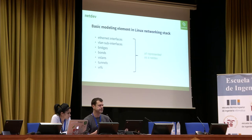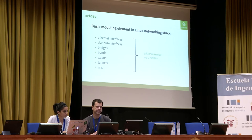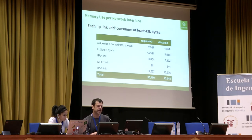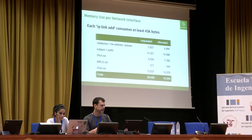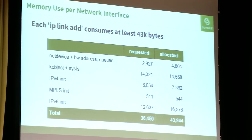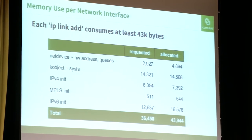Each one of these network interfaces visible in a Linux kernel is represented at the kernel level by a net device. Ethernet interfaces, VLAN subinterfaces, bridges, bonds — all of these are modeled as what's called a net dev. When you create an interface in Linux, each IP link add is consuming at least 43 kilobytes of memory, before you've even done anything with the interface like plugging it into a bridge or adding an IP address.